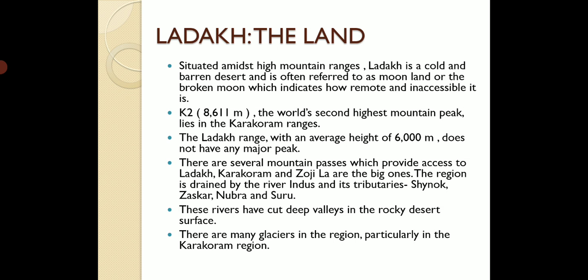Ladakh is situated in a high mountain area. It is a cold desert because at high altitude you will also see ice, and it is a barren desert — meaning you won't find any kind of agriculture activity or human inhabitation there. It is also known as the 'moon land' or 'broken moon,' which means it is very remote and inaccessible — not easy to reach compared to a grassland or plains.